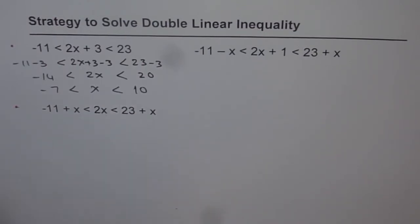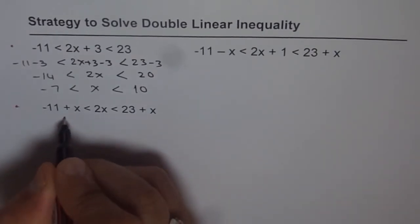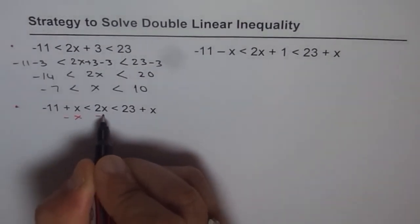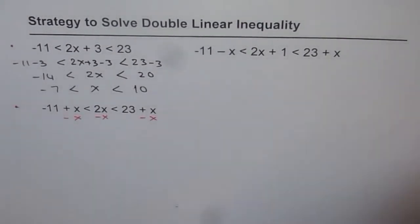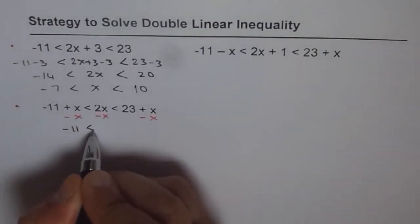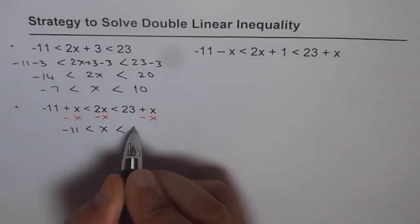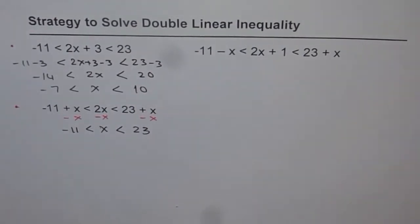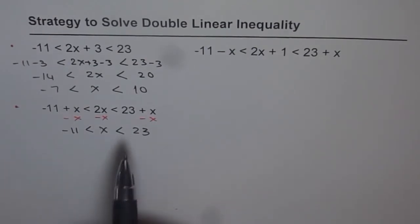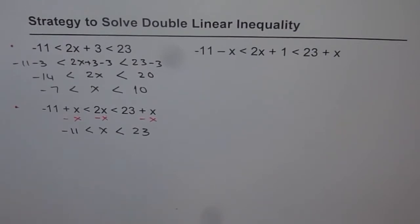These are plus x plus x. So what we will do is take away x from all three sides — minus x, minus x, and minus x. Once we do that, we get minus 11 is less than x. 2x minus x is x, and is less than 23. So we get our solution: x is greater than minus 11 but less than 23. That's so simple.